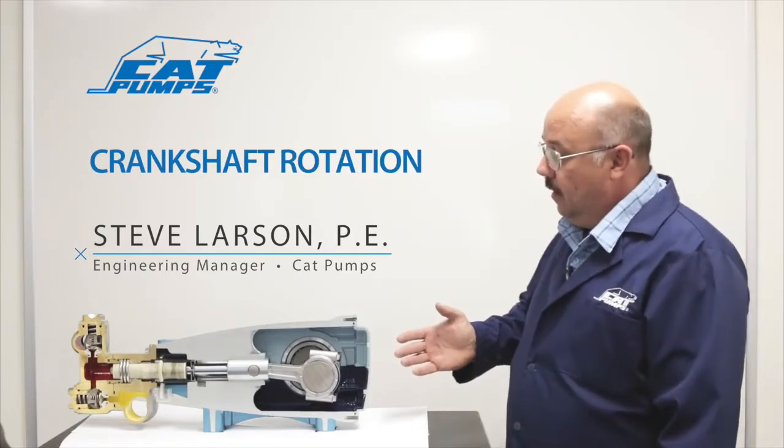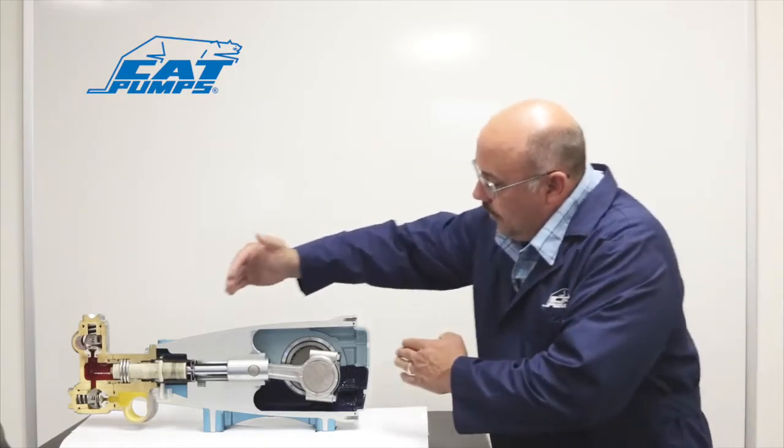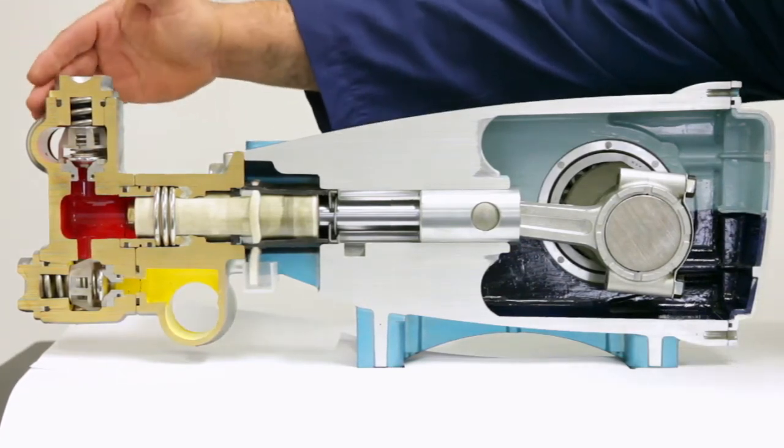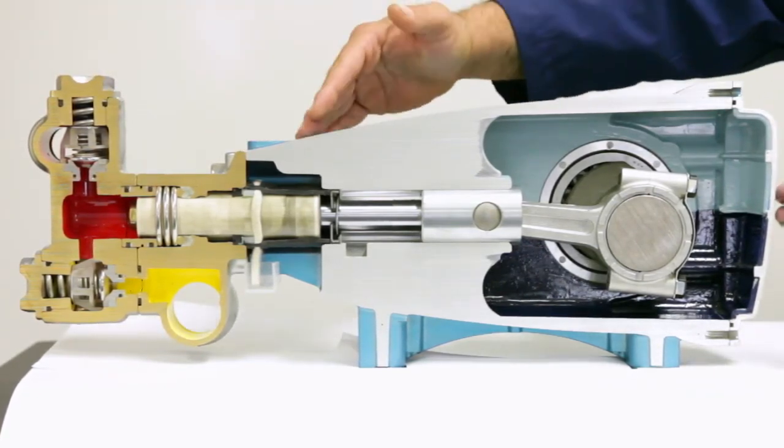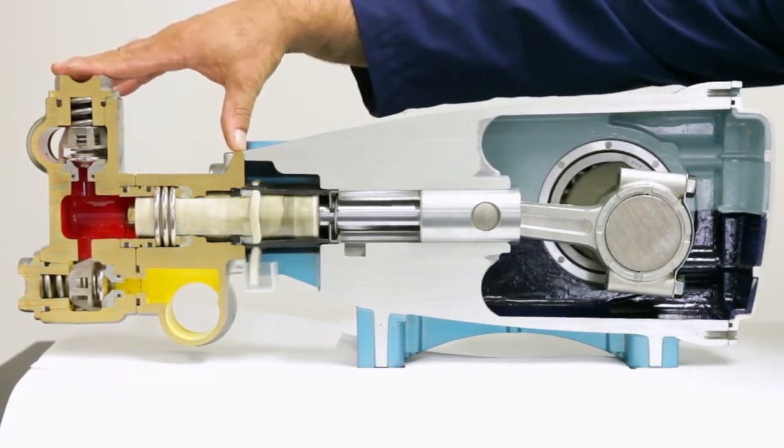What I've got modeled here is a 35-35 cross-section view, showing from here to here is the drive section, from here to here is the fluid section. This is where we put the Cat Pumps oil and this end here is where we handle our pumped liquid.